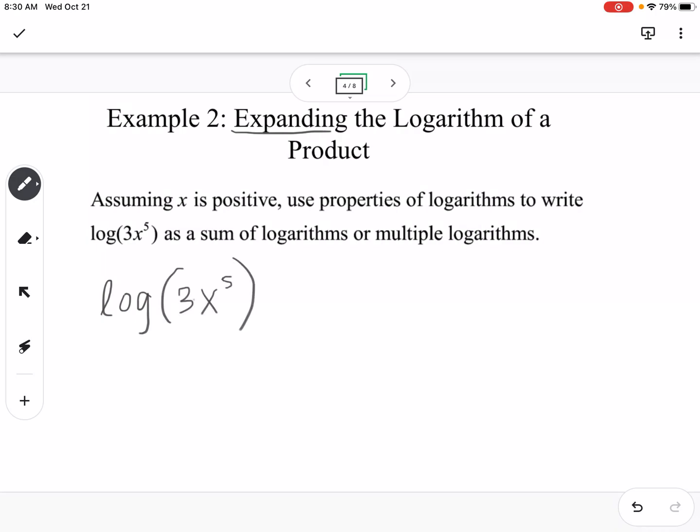So the first thing I notice is we're multiplying the 3 and the x to the fifth. So multiplying expands to addition. So this would become log of 3 plus log of x to the fifth.